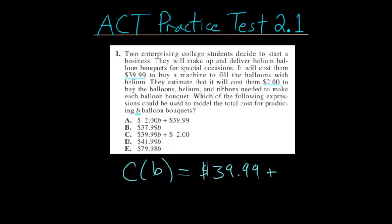And we know that there are B bouquets being produced. That B could be any number, but for now it's just left as a variable. So we can write that it's going to be this $2 per bouquet multiplied by the number of bouquets.